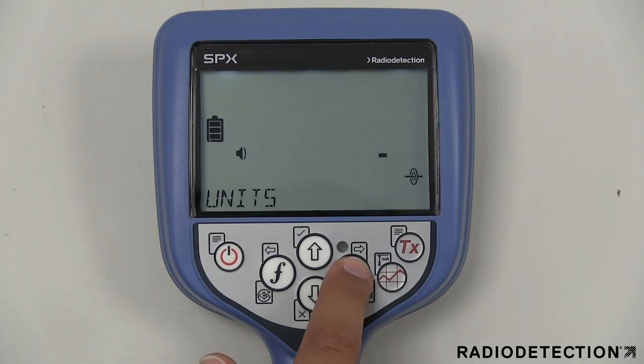The units menu gives you the option of displaying metric or imperial units on the screen.